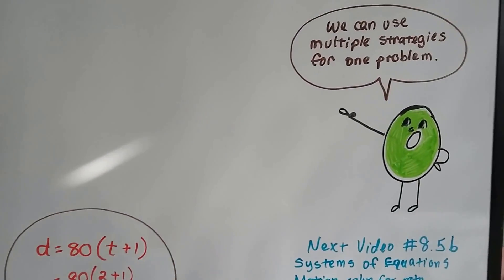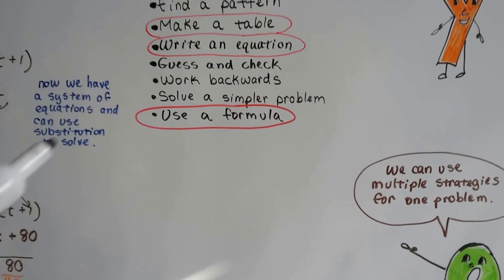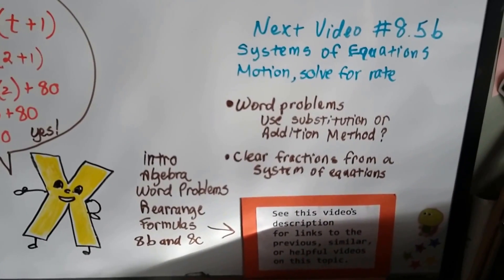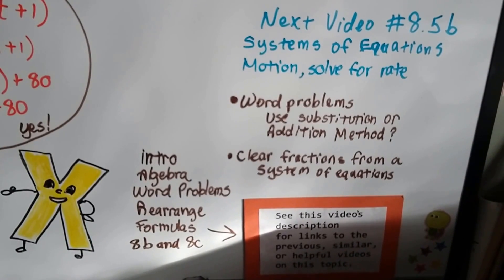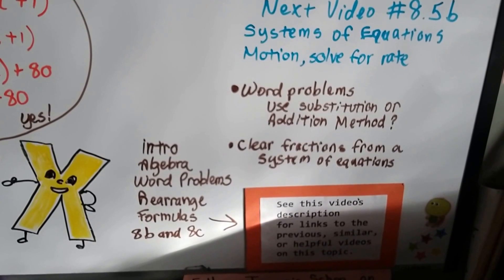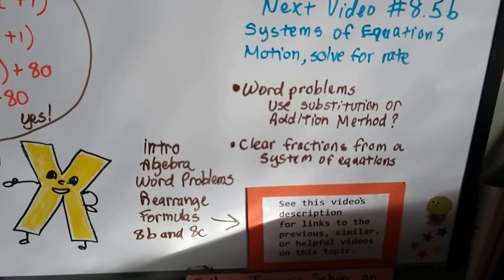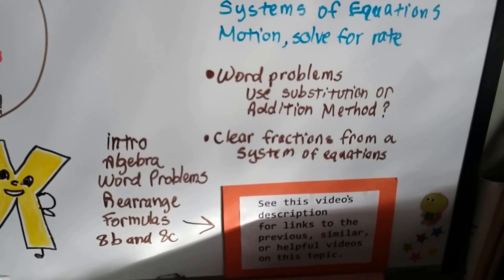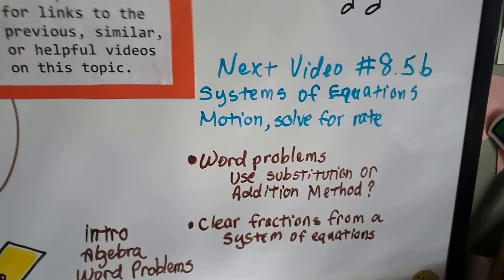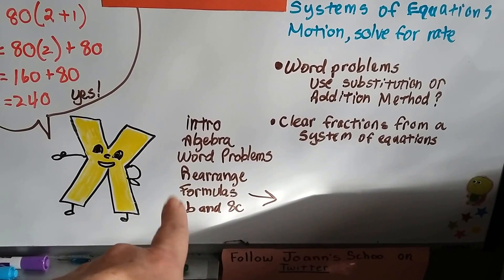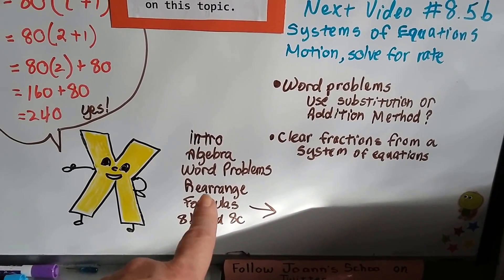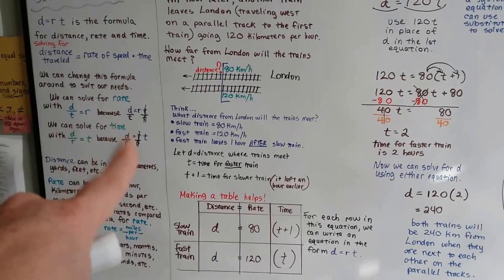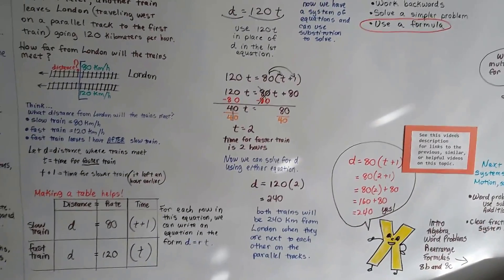We can use multiple strategies for one problem if it helps us solve it. You don't have to use just one strategy. Now in the next video, 8.5b, we're going to be doing more systems of equations solving motion for rate. If you want to link to word problems using substitution or addition method, or learn how to clear fractions from systems of equations, or rearrange formulas to fit your needs, there will be links in this video's description.